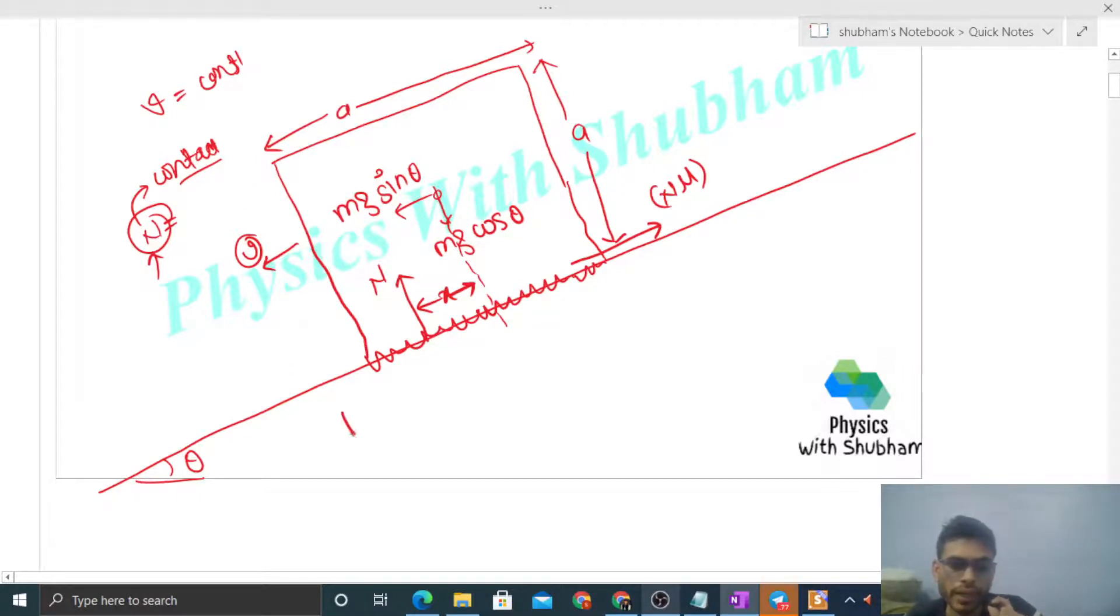Now you can see it is moving with constant speed, which means net force should be zero because there's no acceleration. It is moving with uniform speed, so net force on the block should be zero. Perpendicular to the incline surface, normal reaction will balance mg cos theta.